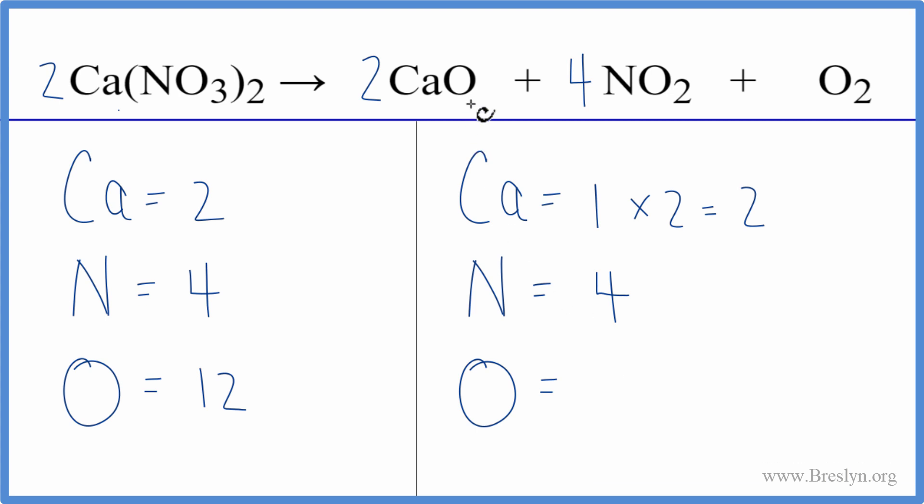Then the oxygens, one times two, that's two, plus two times the four, eight, plus these two here. That's ten, twelve. So we have twelve total oxygens. And we're done.